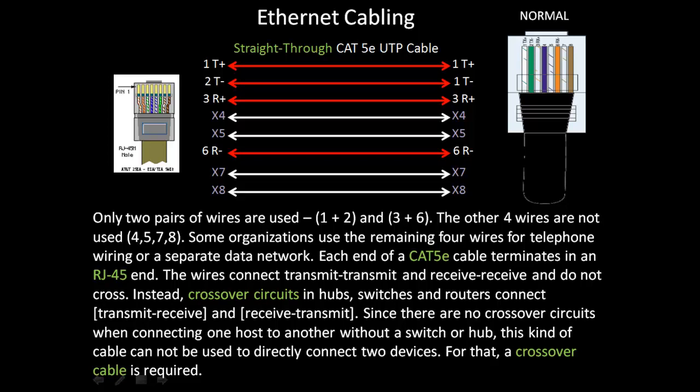Each end of a Category 5e cable terminates at an RJ45 end. The wires connect transmit to transmit and receive to receive and do not cross. Instead, crossover circuits in hubs, switches, and routers connect transmit to receive and receive to transmit. Since there are no crossover circuits when connecting one host to another without a switch or hub, this kind of cable cannot be used to directly connect two devices. For that, a crossover cable is required.